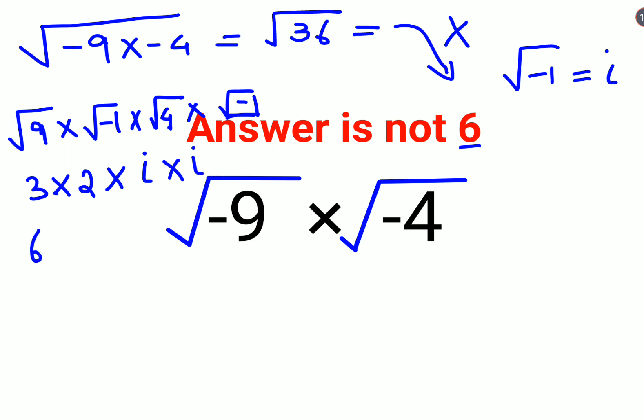So basically you're getting 6 × i × i, which gives you i². Now, to find the value of i², you need to square both sides. The square of √(-1) is -1, so this gives you 6 × (-1). The answer comes out to be -6.